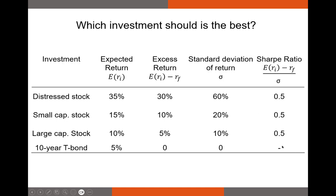Very risk averse people might even prefer the 10-year T-bond because it has no risk. This risk aversion concept is very important when we determine exactly where we put our money — do we put it in T-bills or do we put it in stocks? Ultimately, that answer is going to depend on your coefficient of risk aversion.